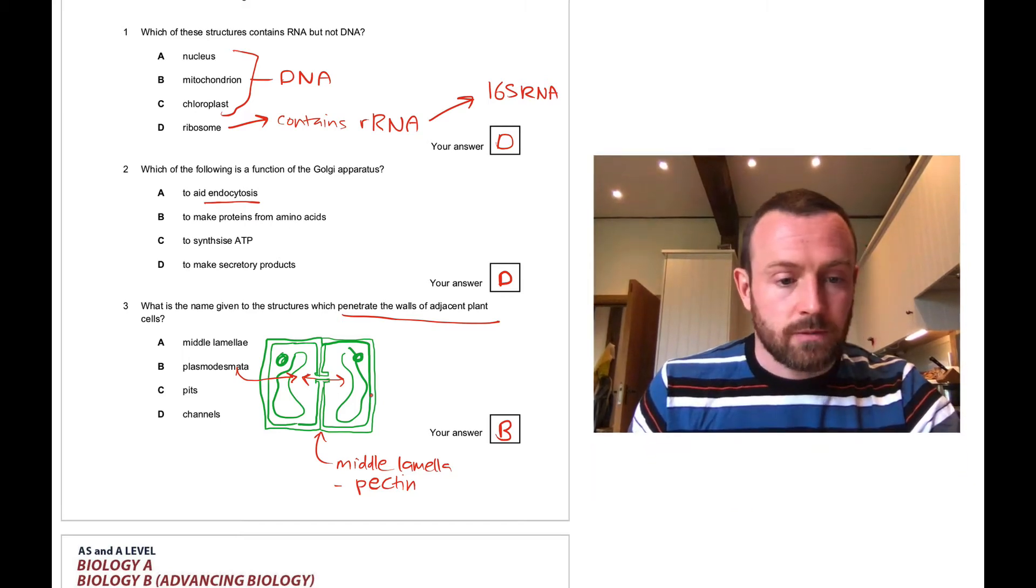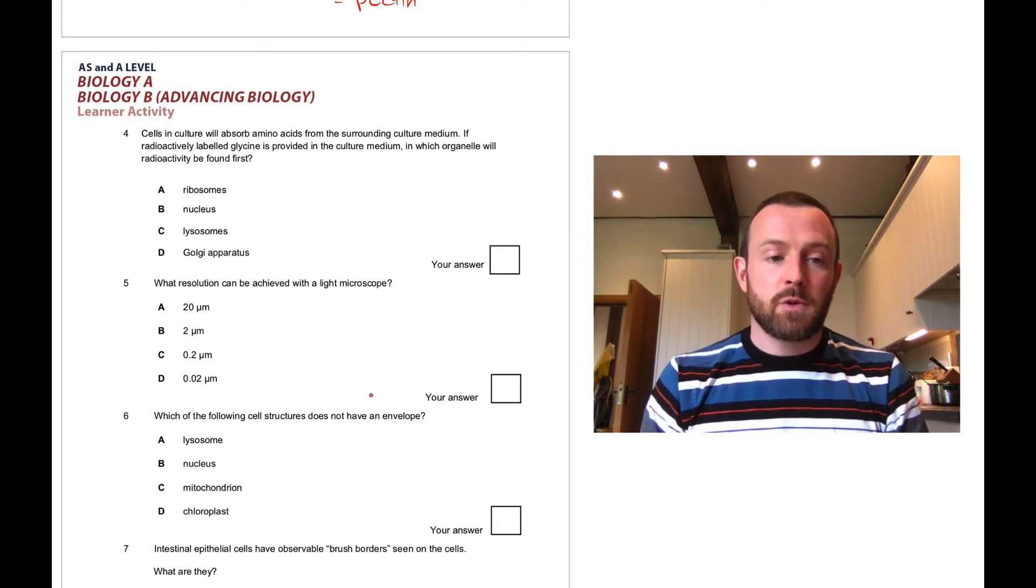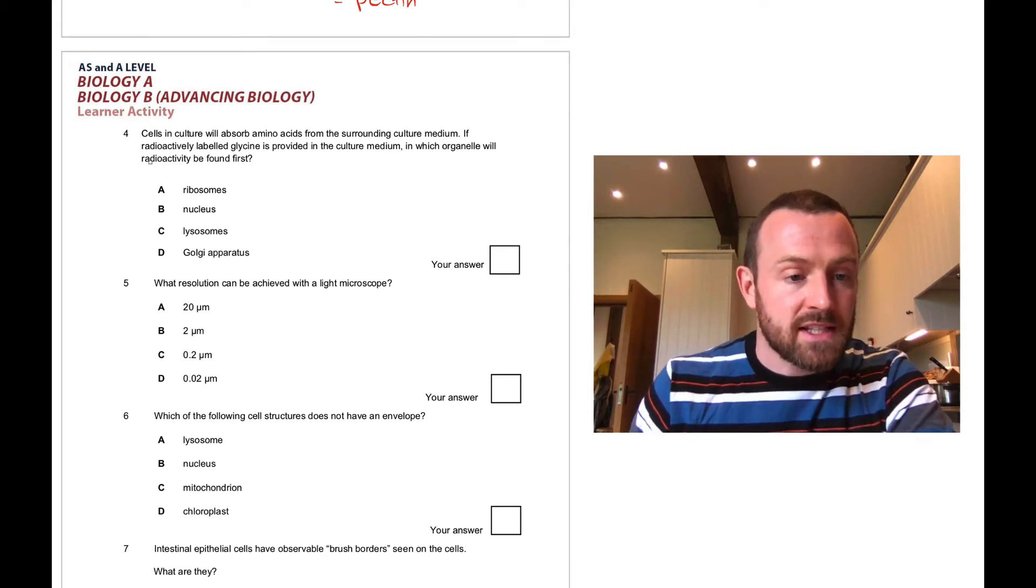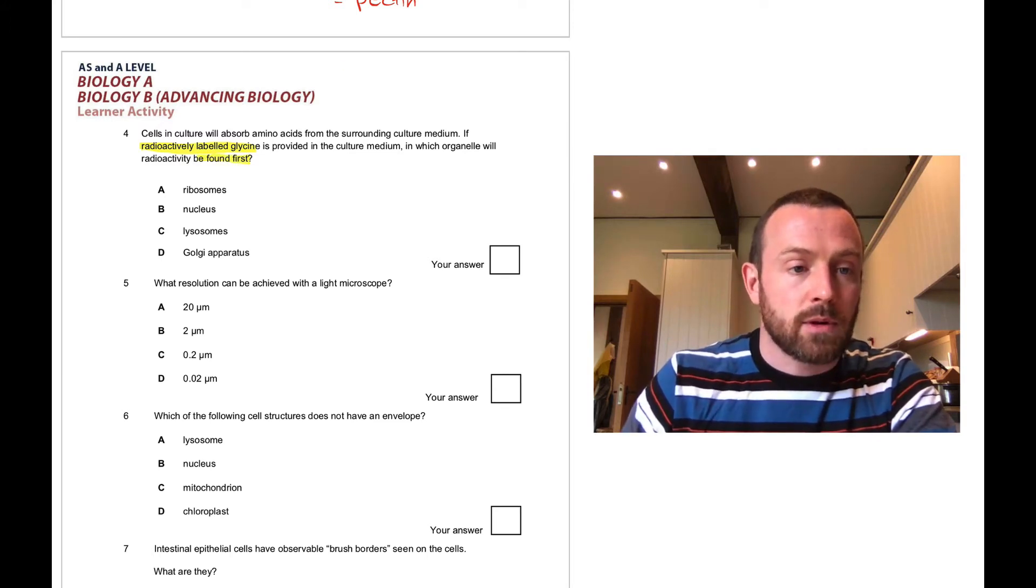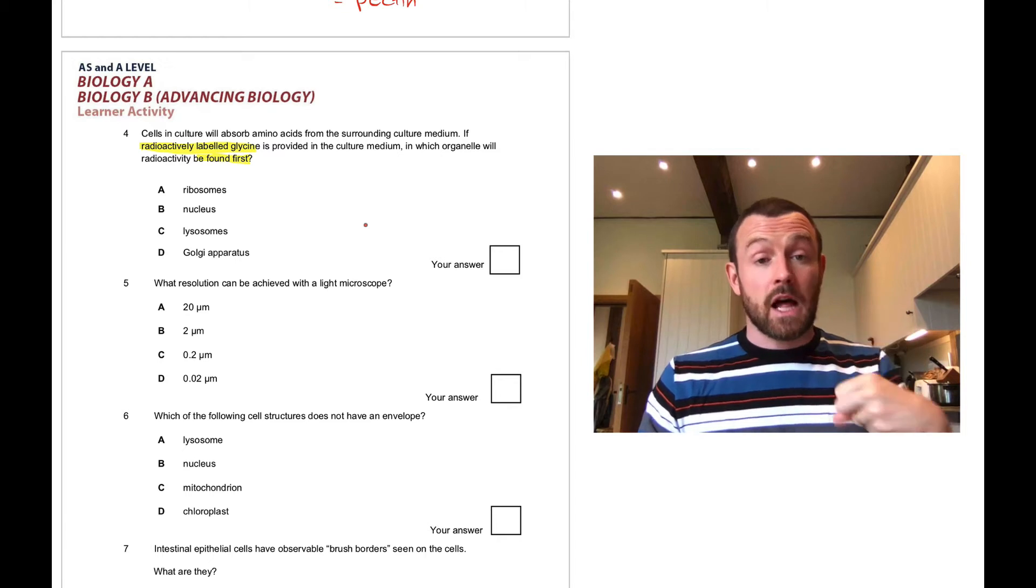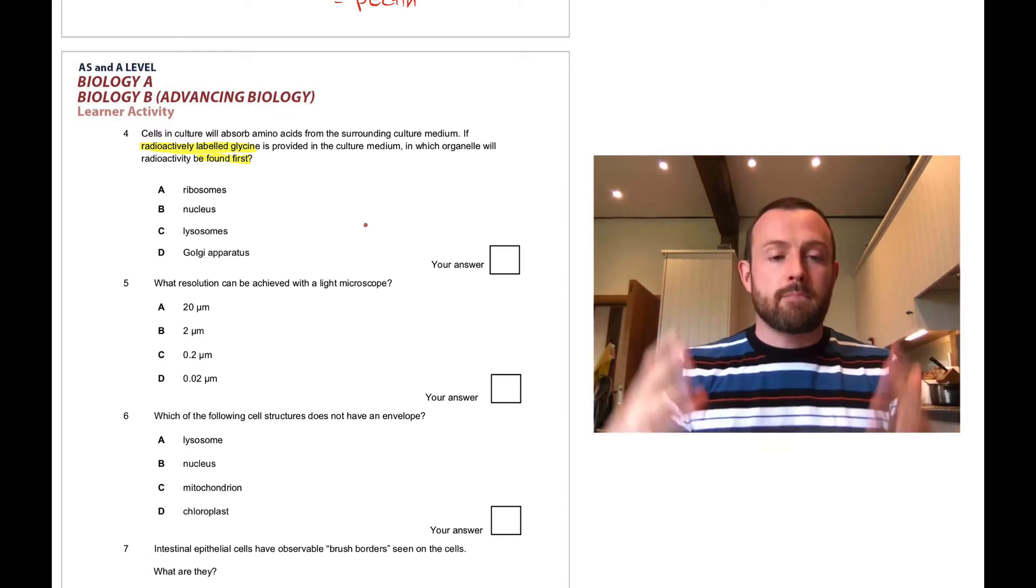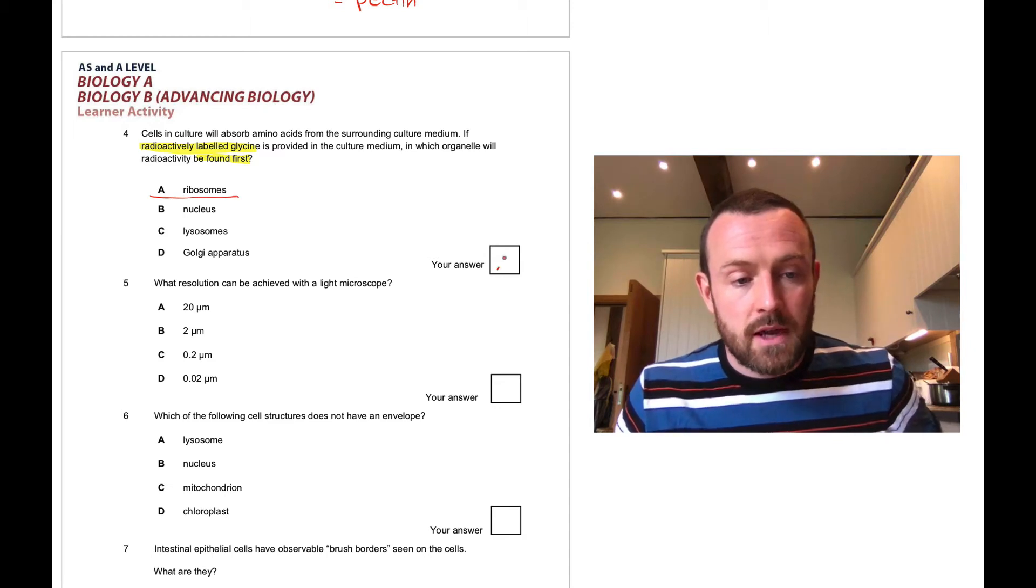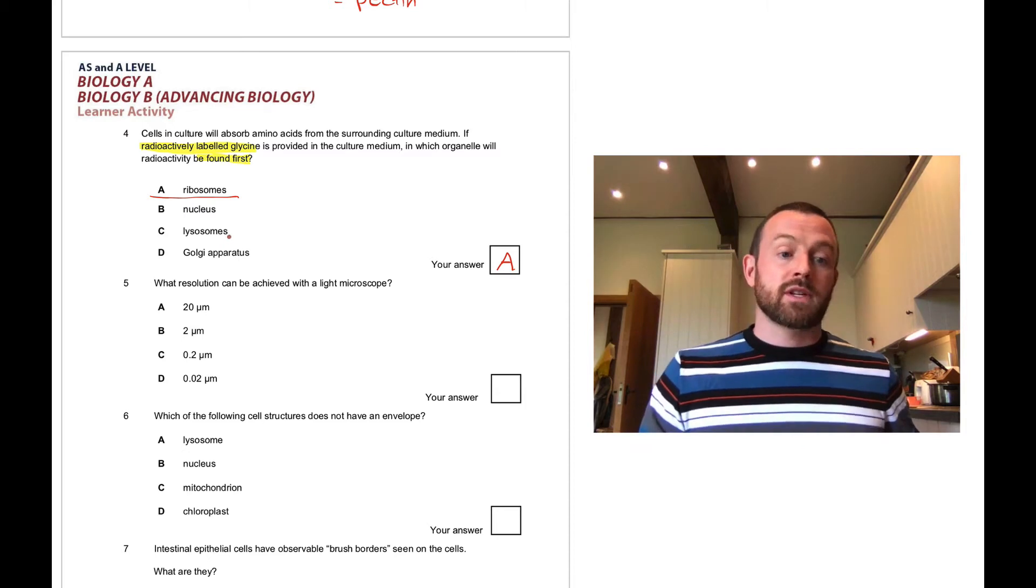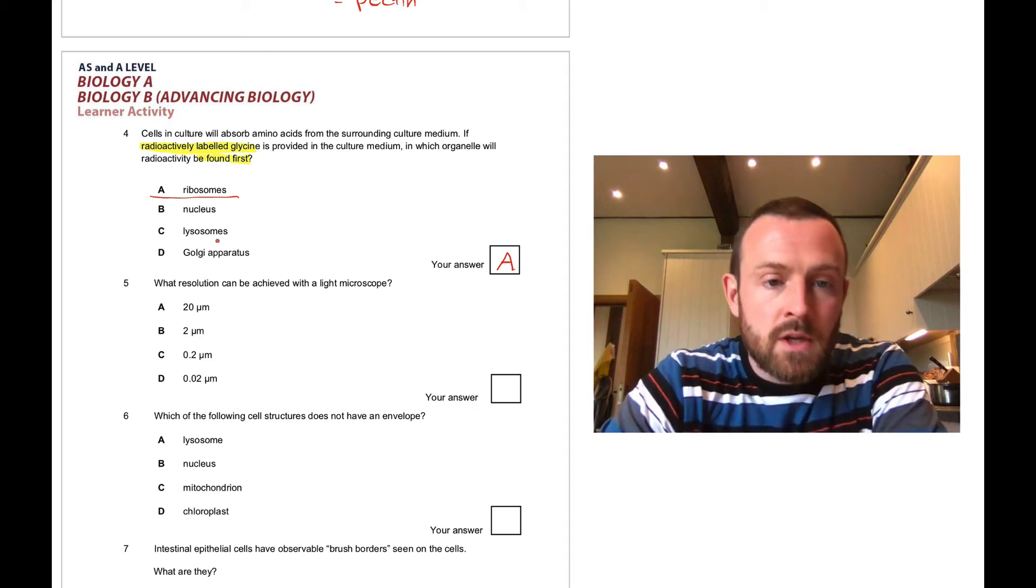Question four: cells in culture will absorb amino acids from the surrounding medium. If you add radioactively labeled glycine, which is an amino acid, which organelle will radioactivity be found first? Basically it's asking what happens to the amino acids once they get taken in by the cell. They're going to be incorporated into the proteins of the cell, and what makes the proteins is the ribosome. So first of all, they will turn up in the ribosomes. Maybe later they turn up in the Golgi as the proteins get further processed, and then they go everywhere as the cell builds new proteins.